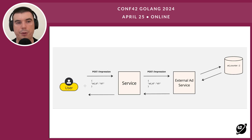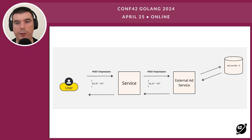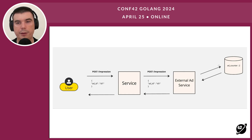From the user's perspective everything is fine too. So we have increased the counter twice. We had only one impression, but the counter is 2. The counter should be 1, but it is 2. That's the idempotency issue we will try to fix.